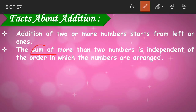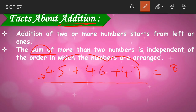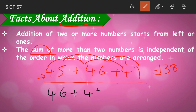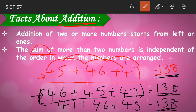The sum of more than two numbers is independent of the order in which the numbers are arranged. For example, 45 plus 46 plus 47 equals 138. No matter how the order is changed — whether 46 or 47 is written first — the answer will always be 138. The sum will always be the same regardless of the order.